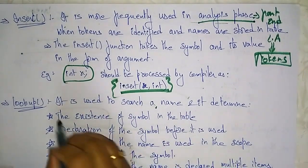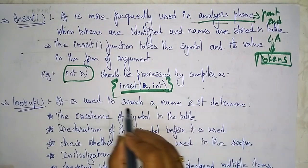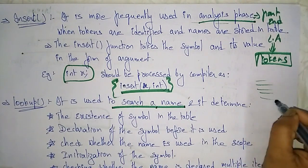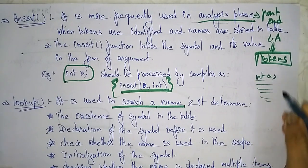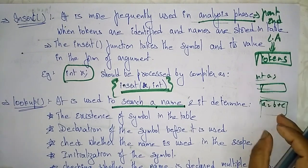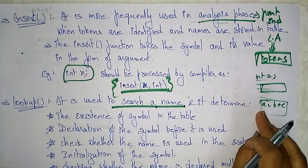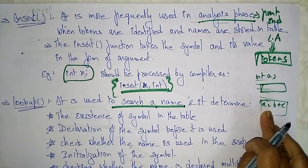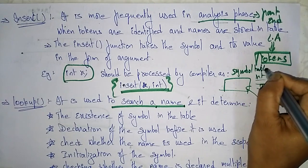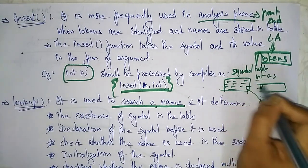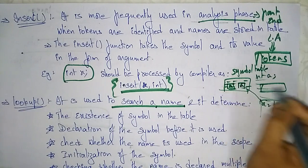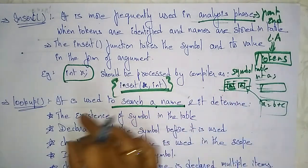Now let's see lookup. Lookup is used to search a name. When a variable is used again in some other module, the compiler will check the symbol table to search whether the variable is already declared or not. If it is not declared, it enters the record in the symbol table. If it is declared, it just uses that variable.